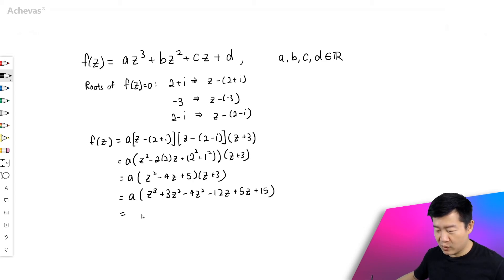Expanding this further, we will be getting a z to the power of 3 minus a z squared minus 7a z plus 15a.